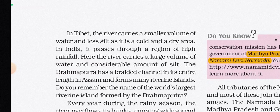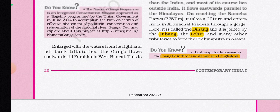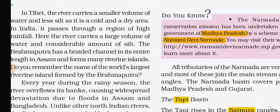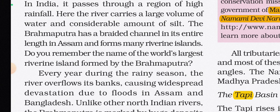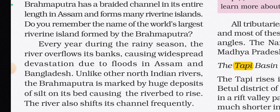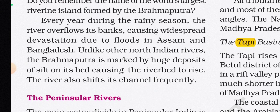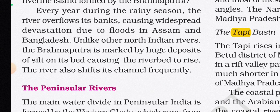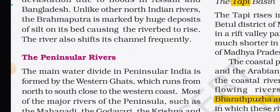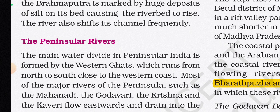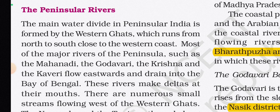In Tibet, the river carries a smaller volume of water and less silt as it is a cold and dry area. In India, it passes through a region of higher rainfall and carries a large volume of water and considerable silt. The Brahmaputra has a braided channel throughout its length in Assam and forms many riverine islands — including Majuli, the world's largest riverine island. Every year during the rainy season it overflows, causing widespread devastation. Unlike other north Indian rivers, the Brahmaputra is marked by huge silt deposits causing its riverbed to rise, and it shifts its channel frequently.